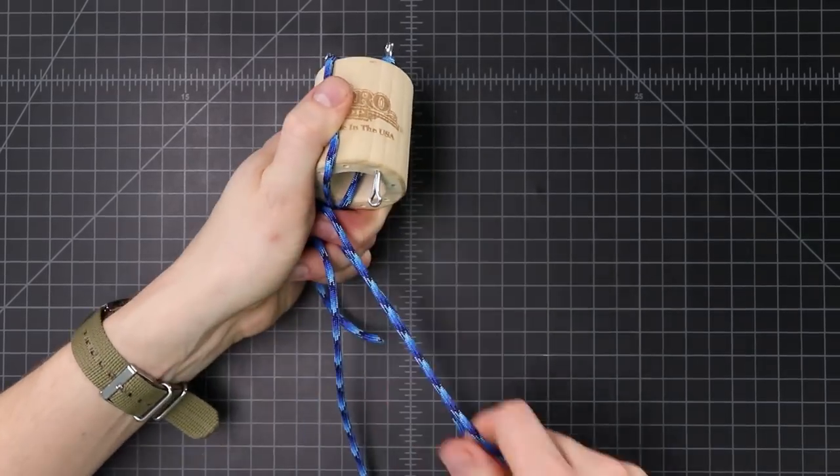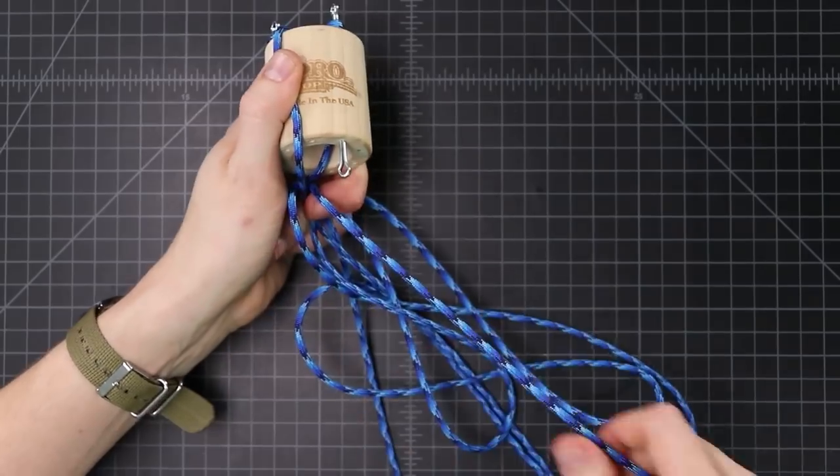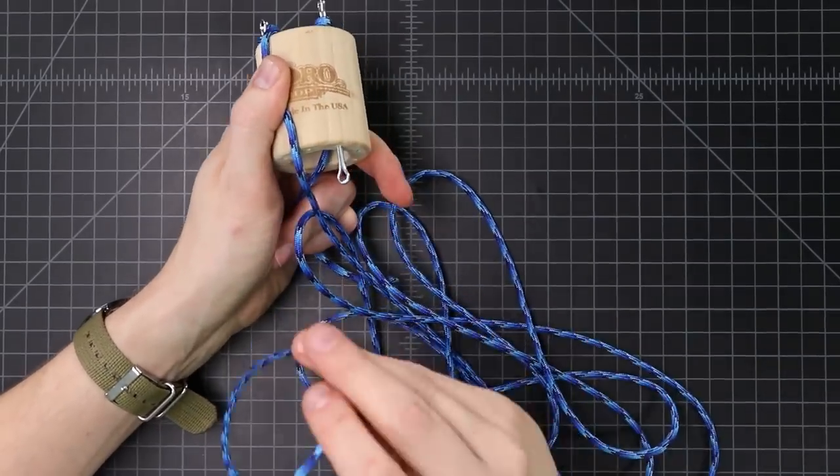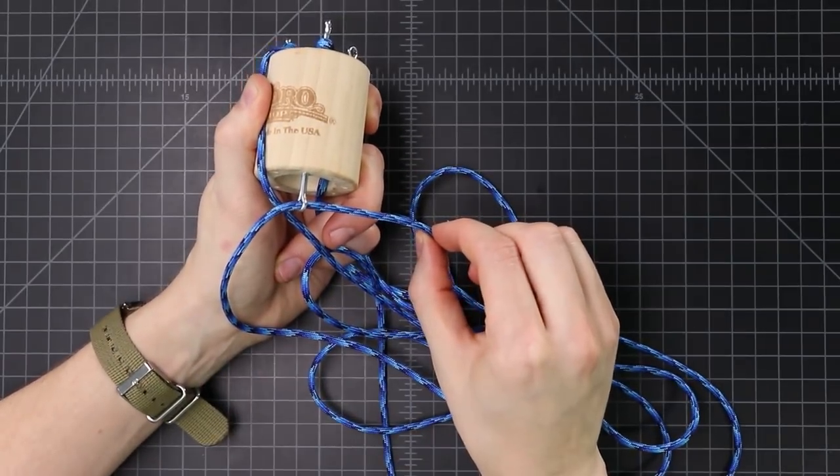So then if I find the other end of my cord, this only works if you're using a pre-cut length it won't work if you're taking it right off of a spool or a large length, but find your end and put it right through the end of that cotter pin.